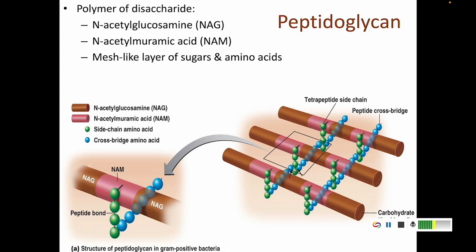Peptidoglycan consists of layers of sugars and proteins. There are two different kinds of sugars alternating: NAG and NAM — so it's NAG-NAM, NAG-NAM, NAG-NAM, forming disaccharide polymers. Then there's a layer of peptides — a layer of protein. You can have more layers of sugars, more layers of proteins, stacking up to make a nice thick cell wall.